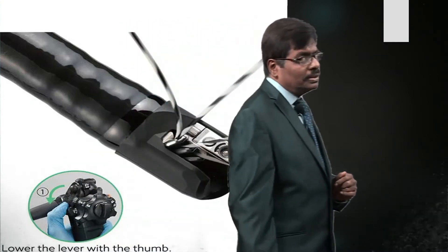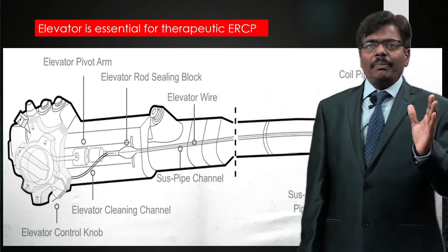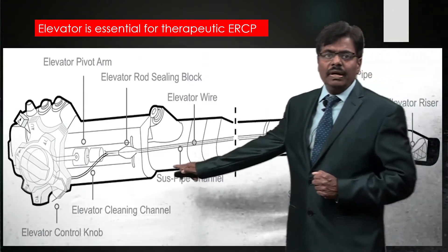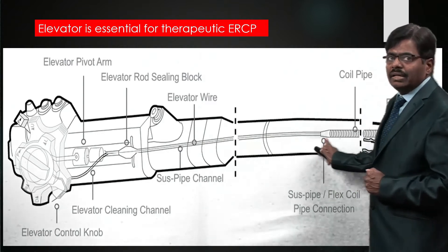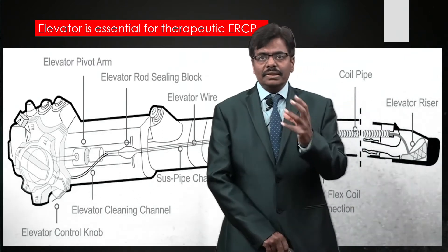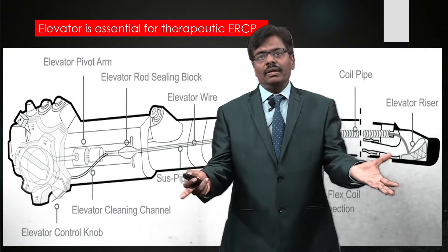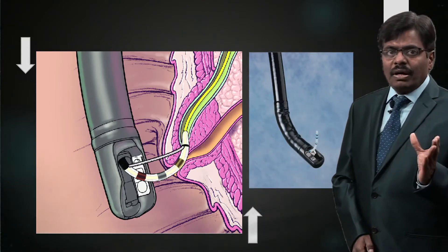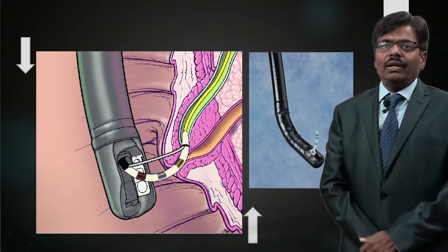The elevator mechanism is very delicate and expensive. You can see where it is attached, how the wire runs all the way through, and how it helps. If something goes wrong, they have to dismantle the entire duodenoscope to rectify the problem. Proper elevation and angulation will bring you to selective cannulation of either the PD or the CBD.